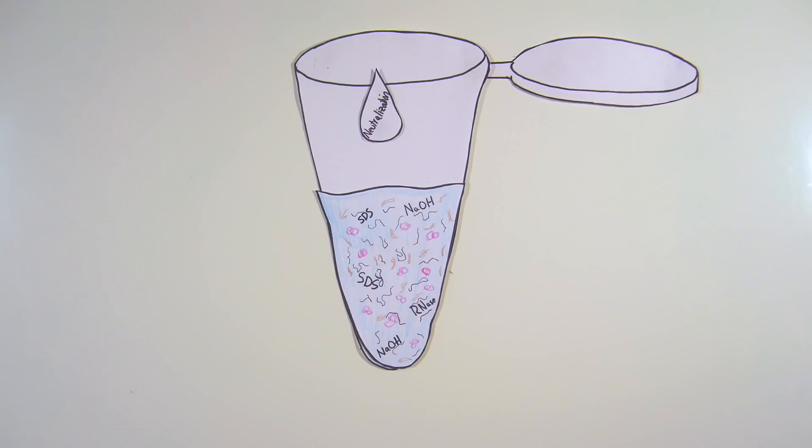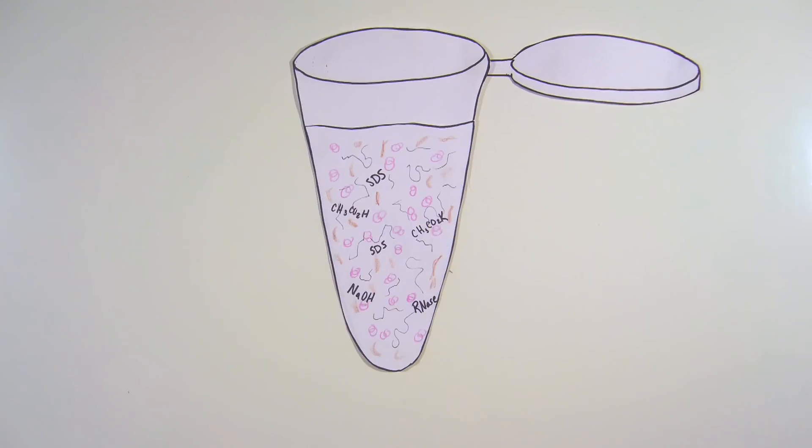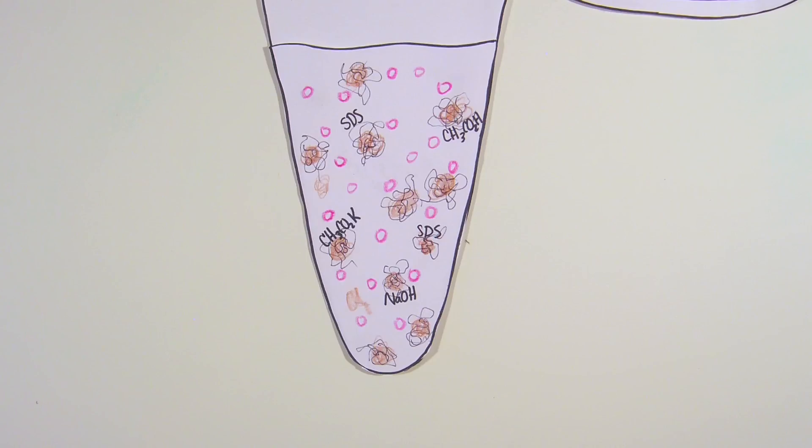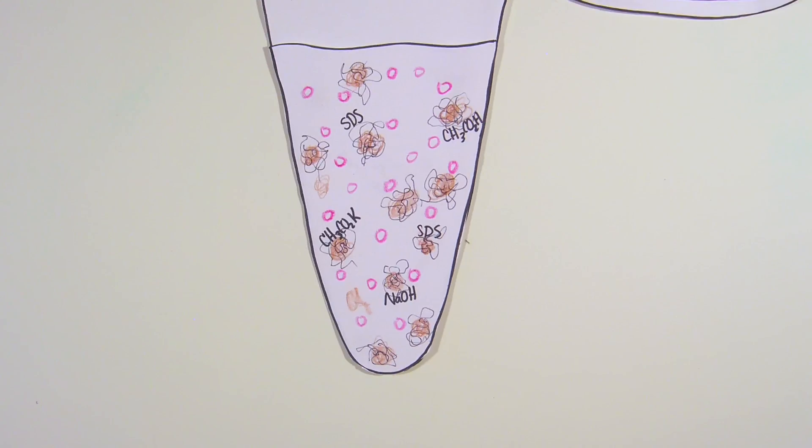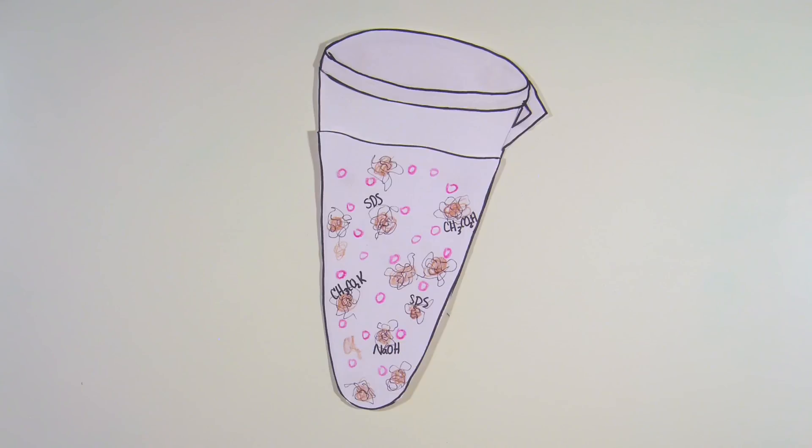This neutralization buffer contains potassium acetate and acetic acid. The potassium acetate returns the pH to neutral, allowing the DNA strands to renature. The long single strands of chromosomal DNA get tangled with other cellular debris, such as proteins and lipids, to form an insoluble precipitate. Meanwhile, the smaller and still intertwined plasmid DNA strands quickly rehybridize and remain in solution.